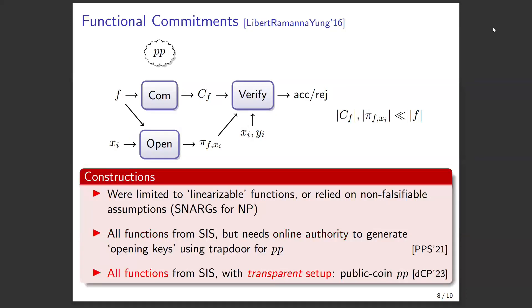That authority holds a trapdoor for the public parameters and could break binding and all security of the scheme — a pretty strong model. Then in work with Leo de Castro this year, we got rid of this authority and showed how to get functional commitments for all functions, still from SIS, but with a transparent setup: the public parameters are just a uniformly random unstructured string with no trapdoor, the weakest setup you could hope for.